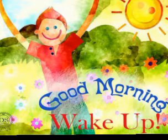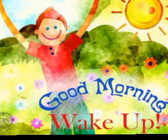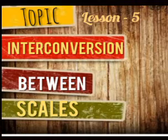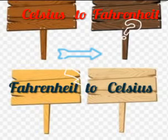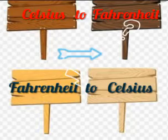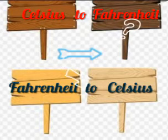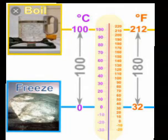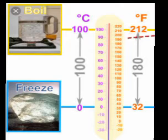Good morning dear students. Welcome back to your science class. Today we are going to learn the interconversion between different temperature scales — that is, how can we convert one temperature scale to another. For example, water boils at 100 degrees on the Celsius scale, whereas the boiling point of water is 212 degrees on the Fahrenheit scale.